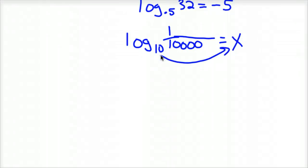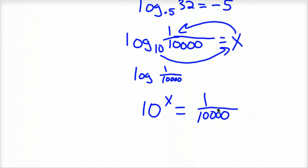I'll set this equal to X. This is the common logarithm, so you could have just wrote it as log of 1 over 10,000. But 10 to the X equals 1 over 10,000. What value of X gives me that? Well, 10 to the 4th is 10,000 because there's four zeros, or you could expand it out: 10 times 10 times 10 times 10 gives you 10,000.